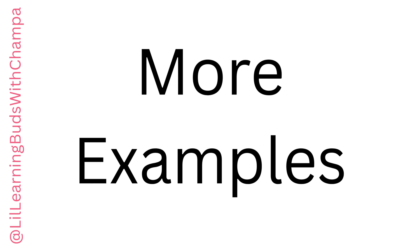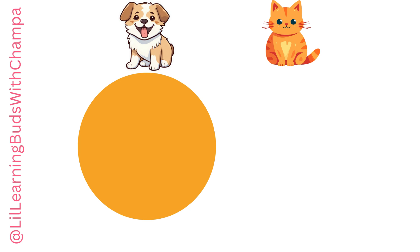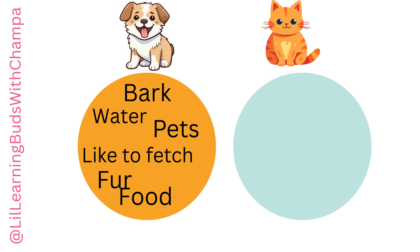Let's see some more examples. Look at these two — the dog and the cat. For the dog: I bark, I like to fetch, I have fur, can be a pet, needs food and water. For the cat: I meow, I like to climb, I have fur, can be a pet, needs food and water.